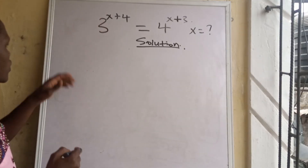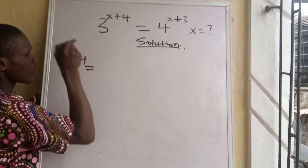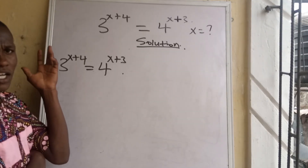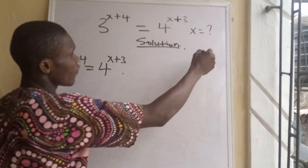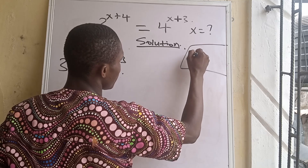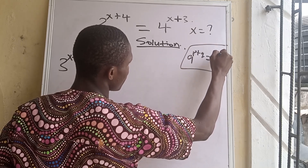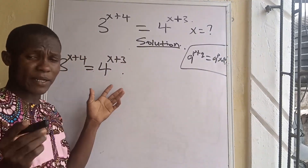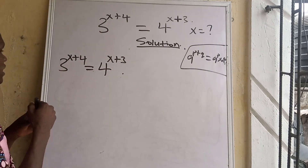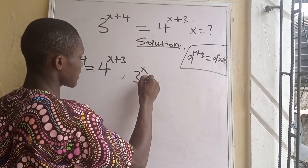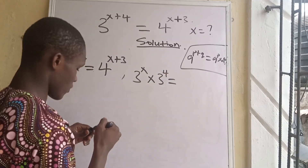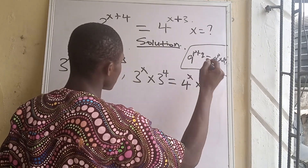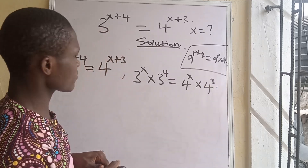We rewrite the question: 3 to the power of x plus 4 equals 4 to the power of x plus 3. We apply the exponent splitting principle: a^(x+n) = a^x times a^n. So the left side becomes 3^x times 3^4, and the right side becomes 4^x times 4^3.